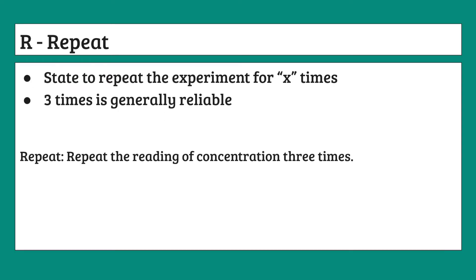After that we have R, standing for repeat. This is a relatively simple stage where all you have to do is state that you will repeat the investigation a set number of times. At IGCSE, repeating the experiment three times is generally a consistent number to use, but you must ensure you are stating how many times you want to repeat the experiment.